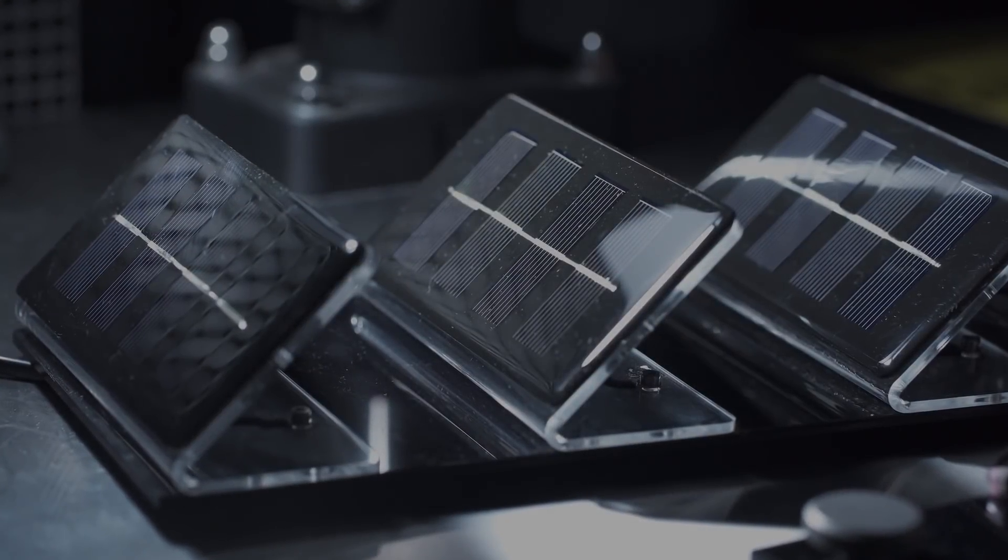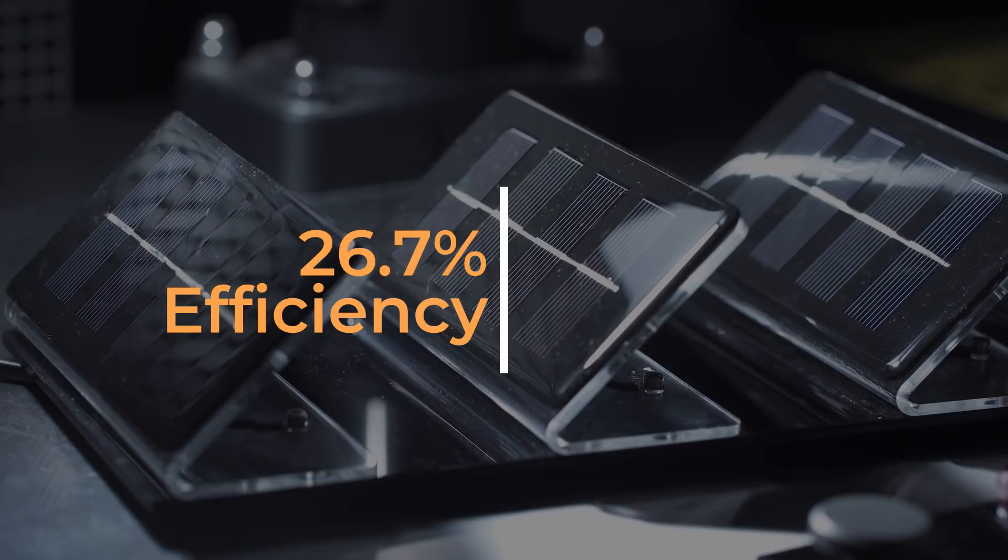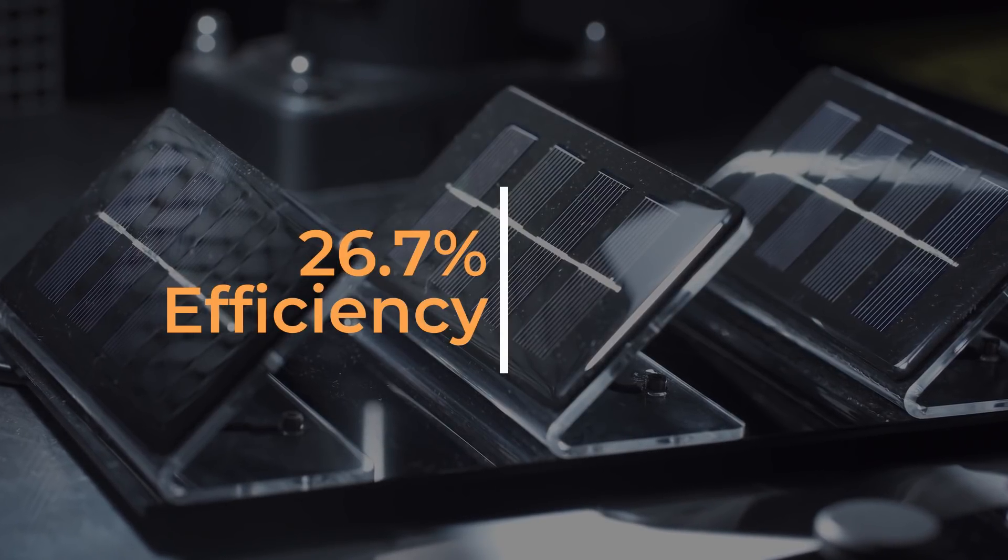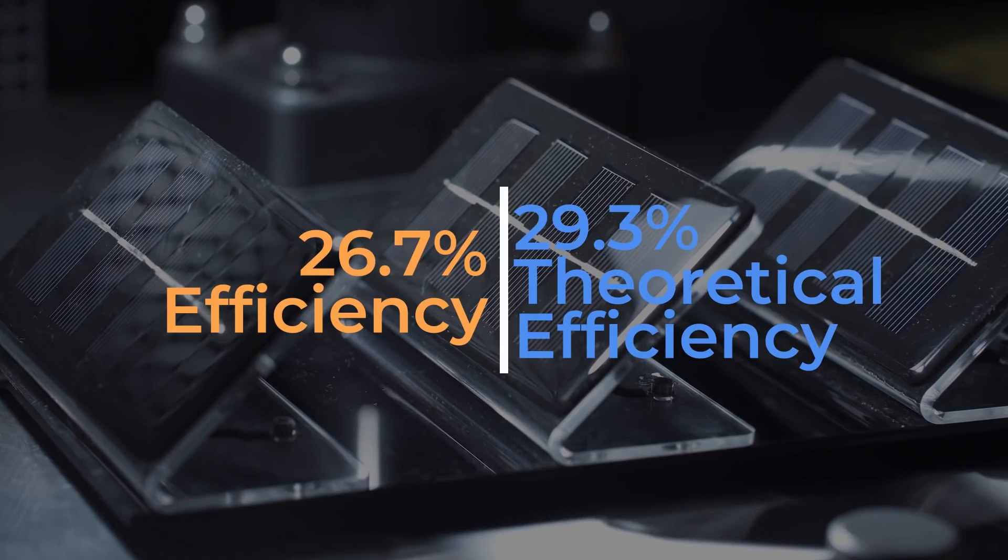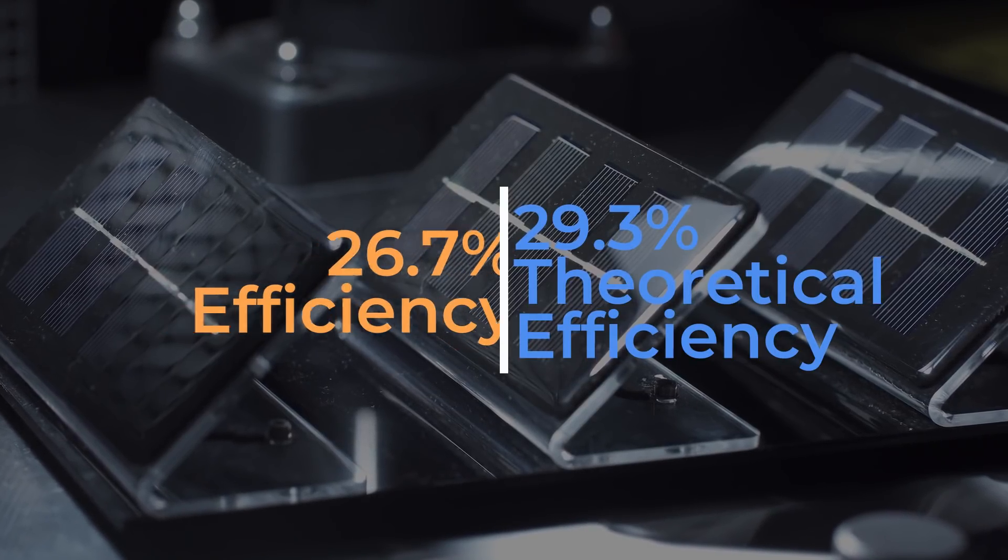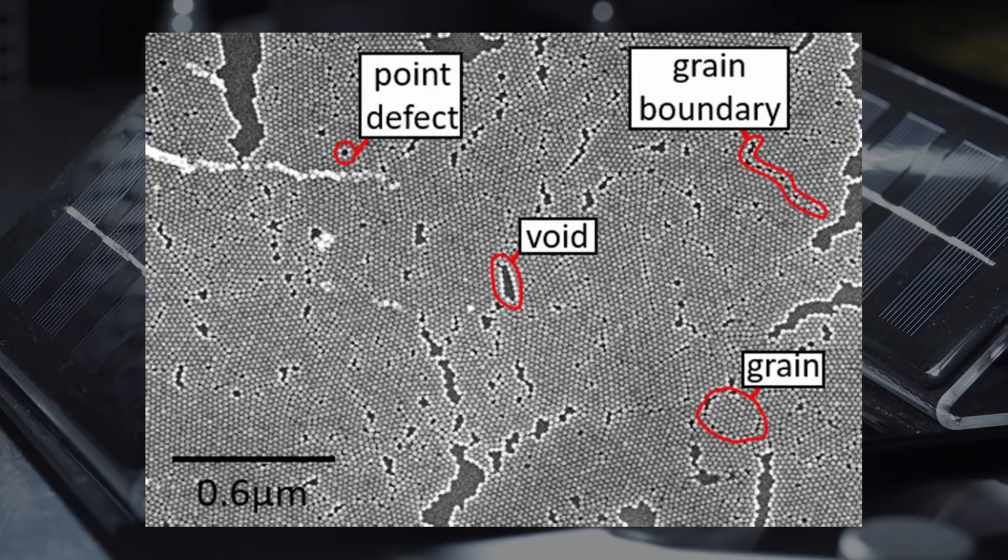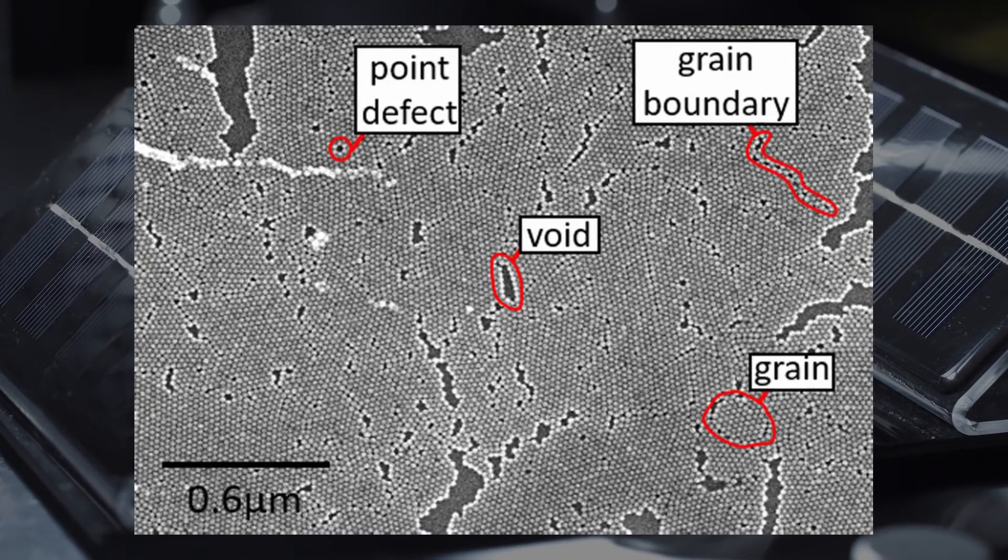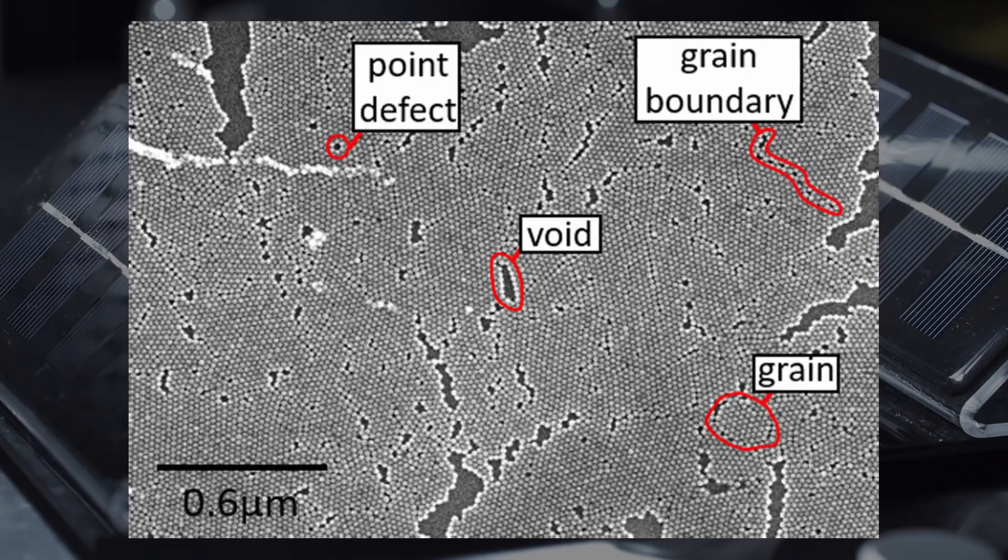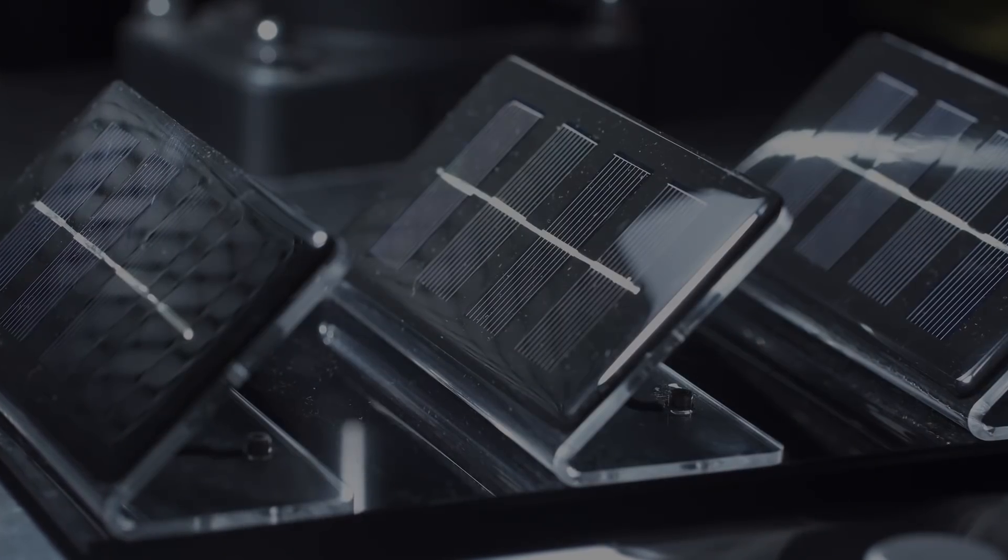Silicon solar cells can achieve power conversion efficiencies of up to 26.7% for a single crystal cell, relatively close to the theoretical maximum of 29.3%. However, this high efficiency can drop off rapidly with small defects or blemishes in the material. Therefore, they have to be processed at extremely high temperatures, which makes them very expensive and time consuming to manufacture.